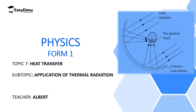We further looked at the properties or the characteristics of thermal radiation. We realized that thermal radiation, just like light, can be refracted or focused to one point using a hand lens. We also discussed emission and absorption in terms of materials, and we said good absorbers of radiant heat are also good radiators, while poor absorbers are also poor emitters.